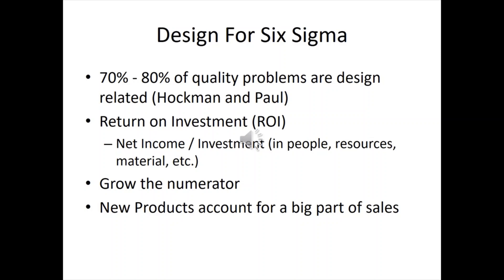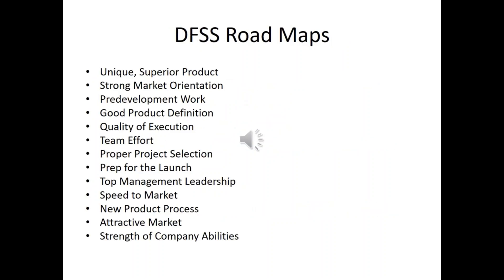You start at the design — 70 to 80% of all quality problems are design-related, from a study by Hockman and Paul. You want to do a return on investment: how much are you going to make versus how much you have to invest in people, resources, and material. And you want to work on growing income — new products account for a big part of sales nowadays.